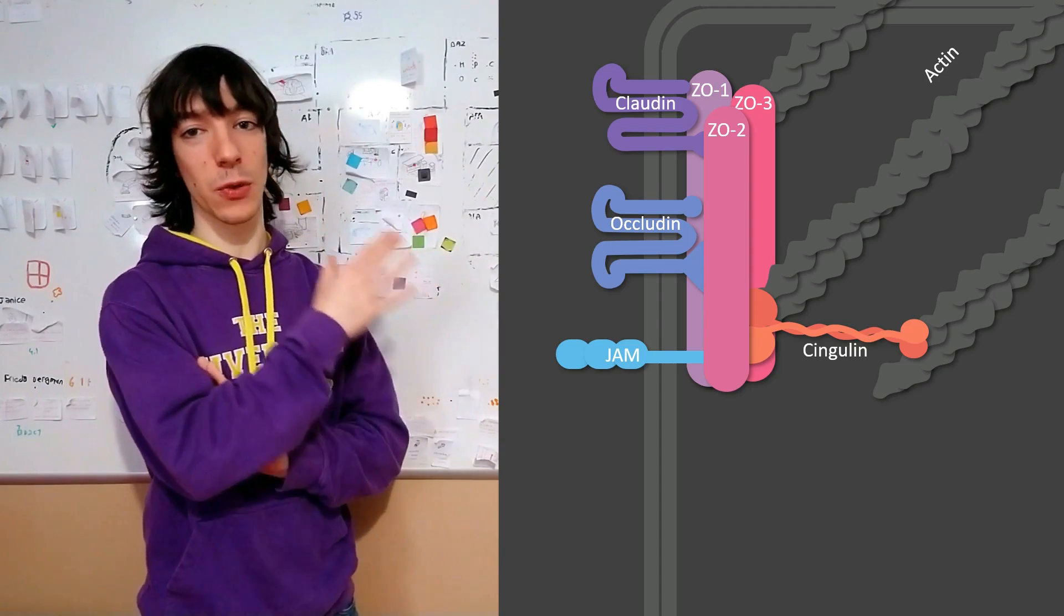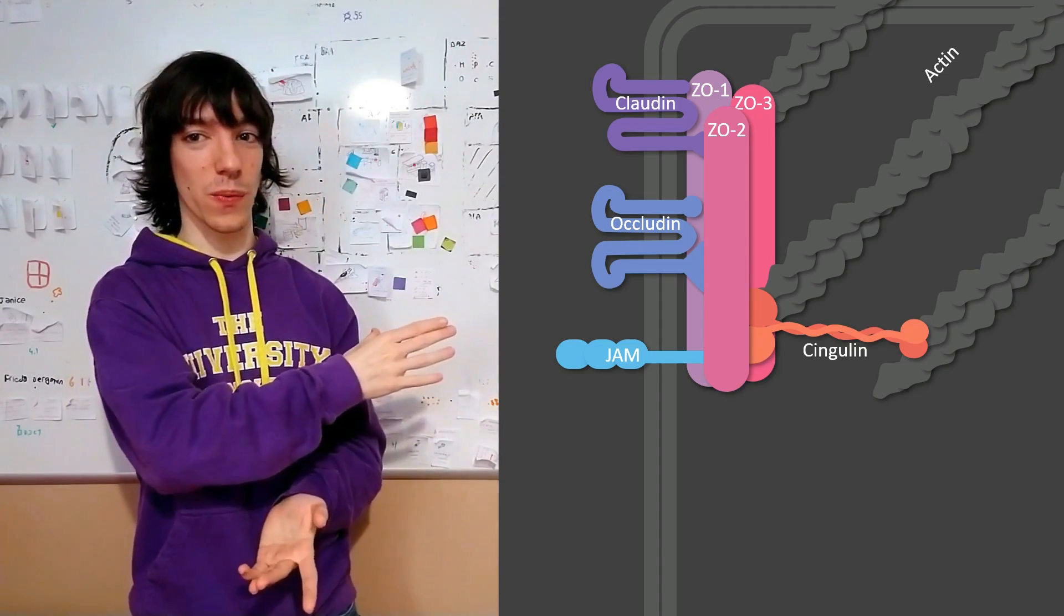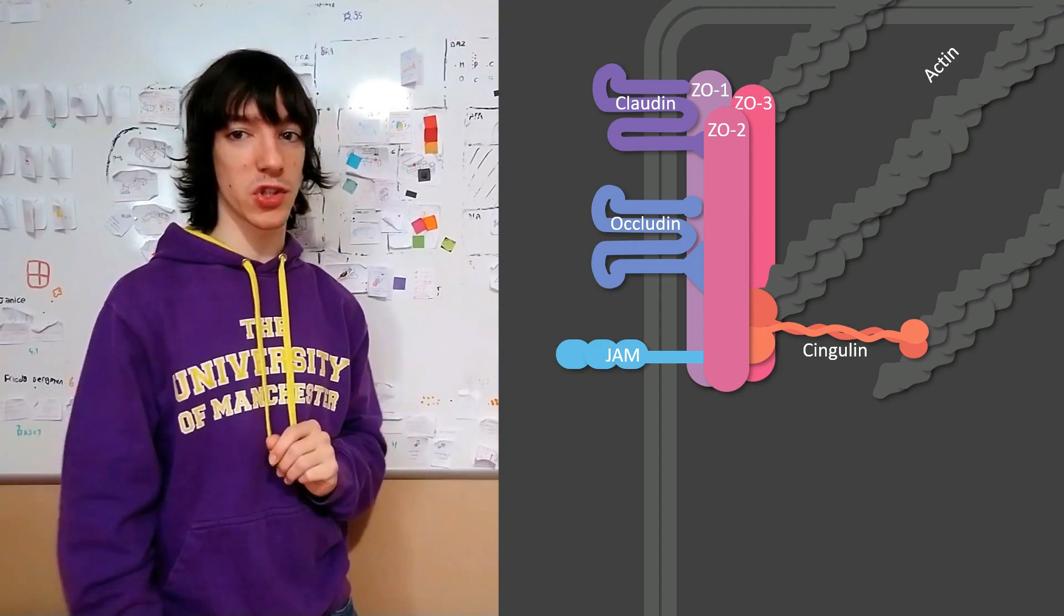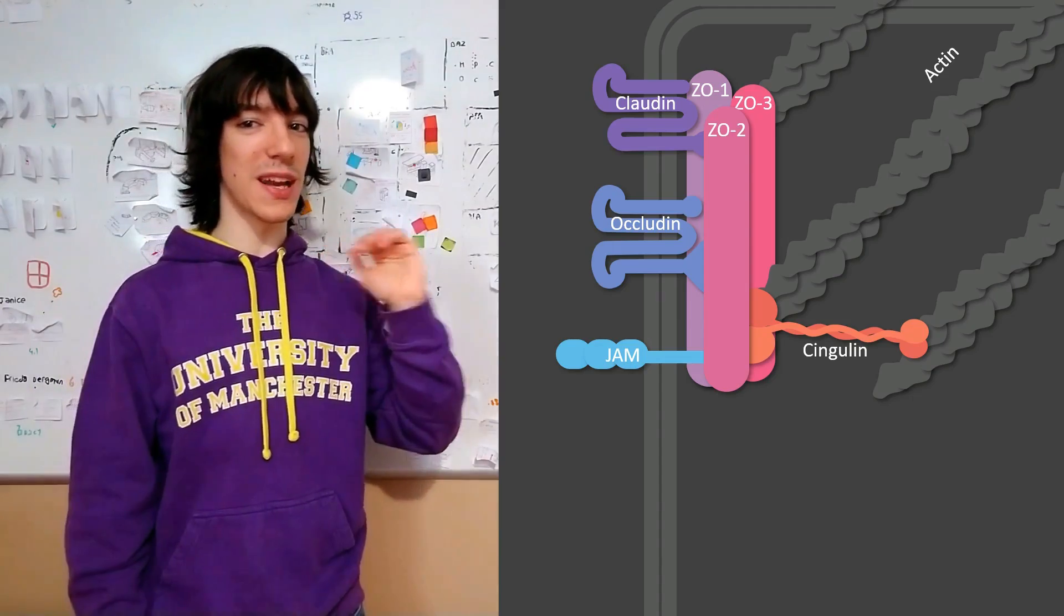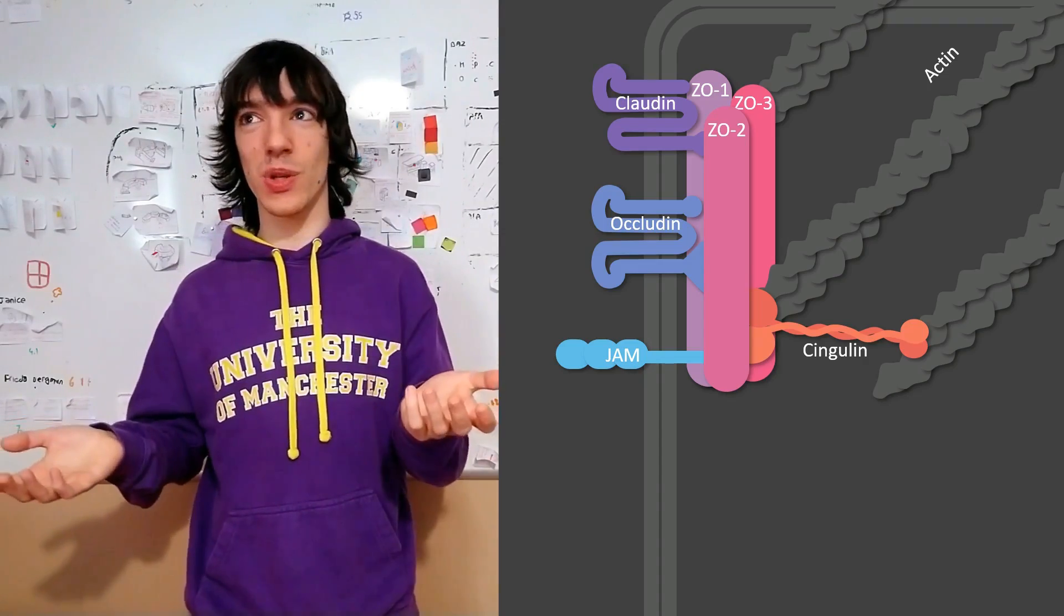This is the classic idea that you will find in most books and I think that's enough for most university courses. And with that, we have a tight junction. There's one last detail I wanted to mention. It's not directly related to tight junctions or their function of maintaining asymmetry, but it's interesting.